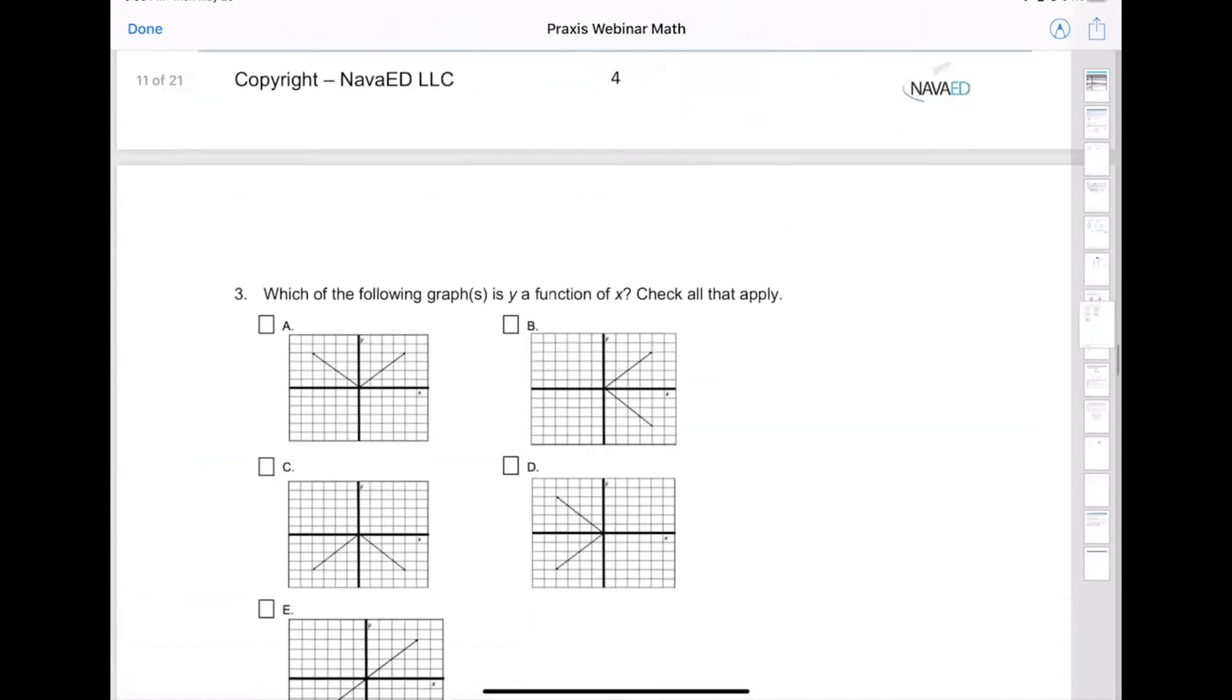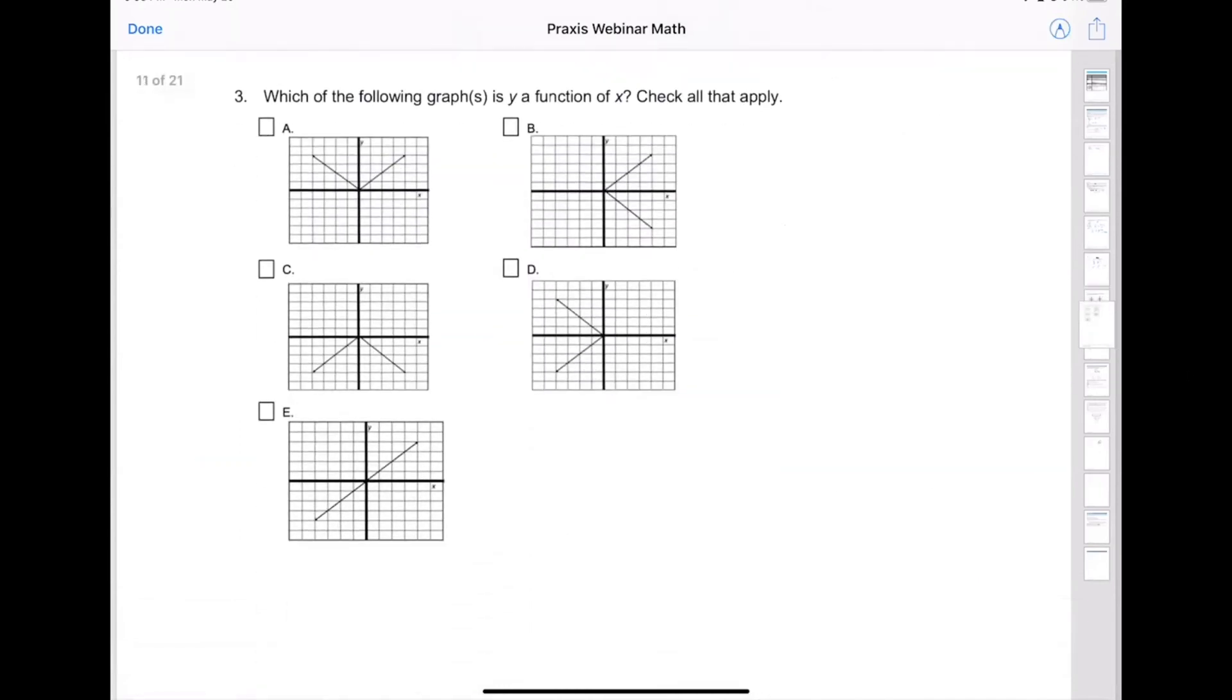When we talk about functions, it's going to give you the graph and ask you which of the following is a function. Remember, we just take a line that goes straight up and down, and with that straight up and down line, if we can make it hit the line in the graph more than once, it's not a function. So on this graph, there's no way where I can put a straight vertical line and it touched more than once. That's the only place it can touch if I do it that way, and it goes across. Therefore, this is a function.